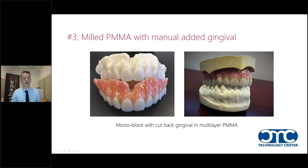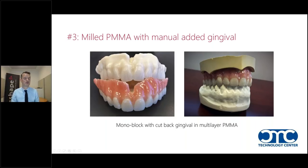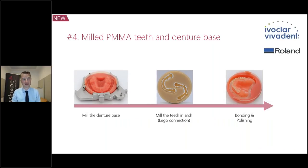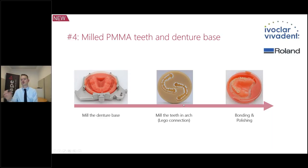I'm a little bit skeptical about using pre-manufactured teeth based on my experiences so far — though I would love any manufacturer to develop better solutions. The next alternative is milled multi-layer PMMA as a monoblock — you mill multi-layer PMMA and add gingival coloring by hand. You can make very beautiful, high-aesthetic cases. However, there's too much manual work and manual dependency. The next alternative is milling the teeth and the denture base separately — mill the base, mill the teeth in arch.